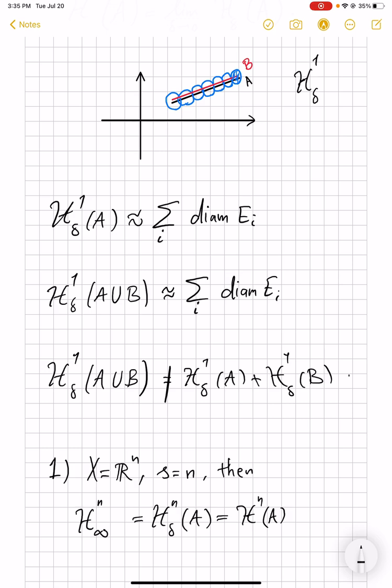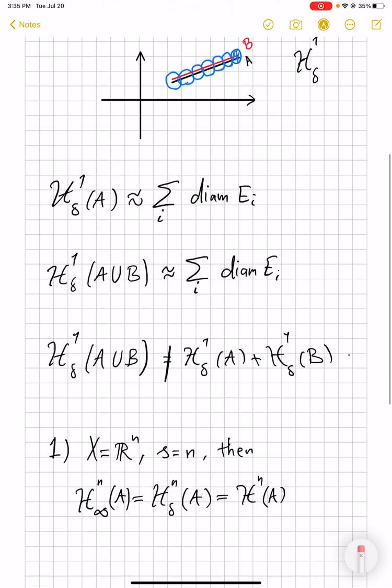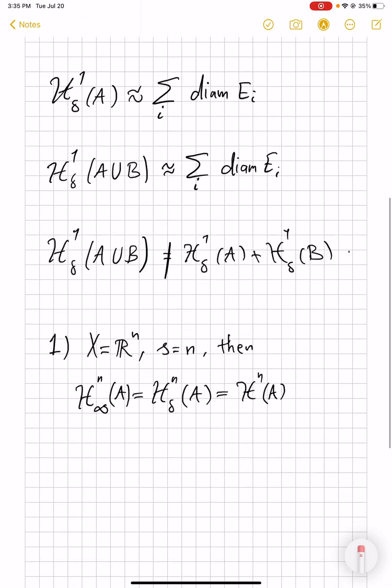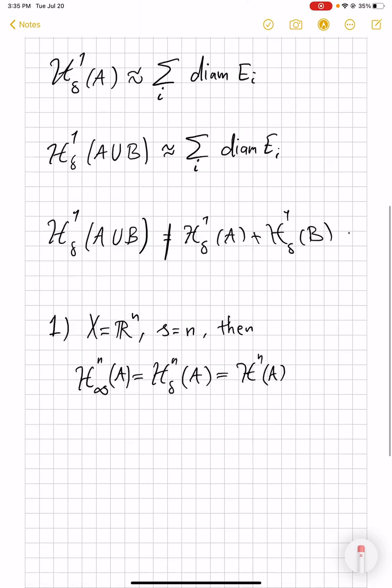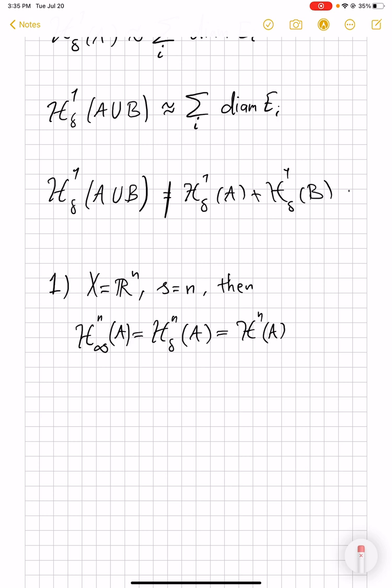the content δ is actually equal to the Hausdorff measure for every δ, even for δ equal to infinity. Which means that there is no need to require the coverings to have diameters that go to zero. So, the infimum of summation of diameters to power n will capture the structure of the set, and it captures its n-dimensional size.